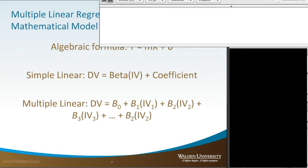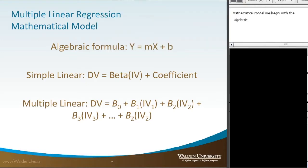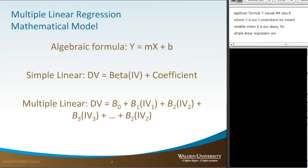When we get into multiple linear regression and the mathematical model, we begin with the algebraic formula many of us are familiar with: y equals mx plus b, where y is the dependent variable, m is the slope, x is the independent variable, and b is the coefficient. For simple linear regression, we use the equation: dependent variable equals beta multiplied by the independent variable plus the coefficient.